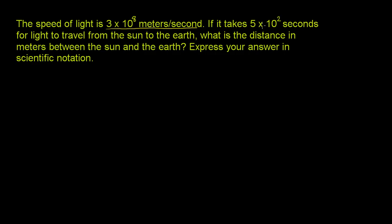If it takes 5 times 10 to the second power seconds for light to travel from the sun to the earth, so just let's think about that a little bit. 5 times 10 to the second, that's 500 seconds. You have 60 seconds in a minute, so 8 minutes would be 480 seconds. So 500 seconds would be about 8 minutes 20 seconds. So it takes 8 minutes 20 seconds for light to travel from the sun to the earth.